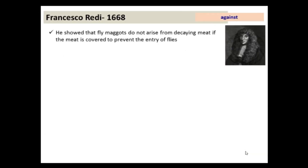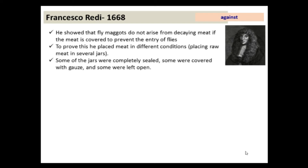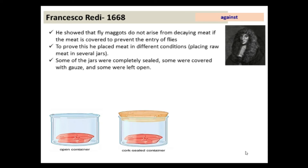There was a controversy between the believers and non-believers of spontaneous generation, and many experiments were conducted to prove or disprove the theory. Francisco Redi did a set of initial experiments to disprove the theory of spontaneous generation. Redi showed that fly maggots do not arise from decaying meat if the meat is covered to prevent the entry of flies. He placed raw meat in several jars: some were completely sealed, some were covered with gauze, and some were left open.